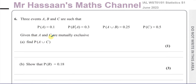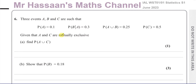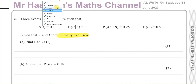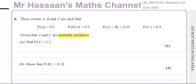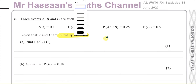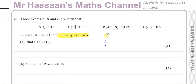Given that A and C are mutually exclusive, find the probability of A union C. When two events are mutually exclusive, they cannot both occur at the same time — there is no intersection between them whatsoever.